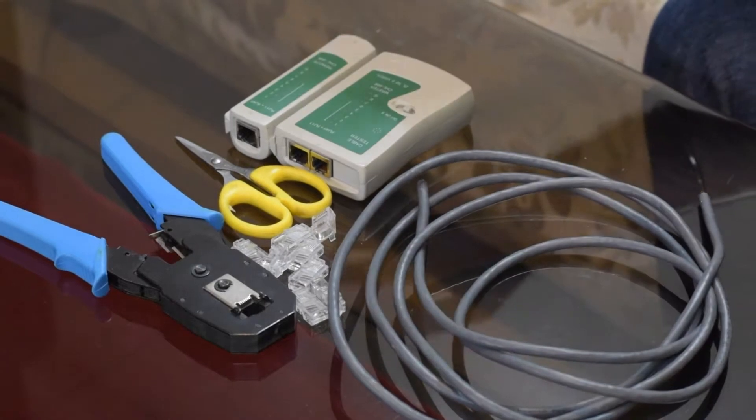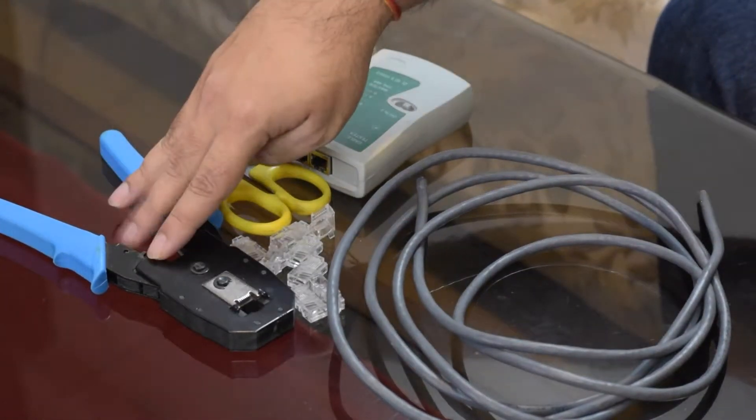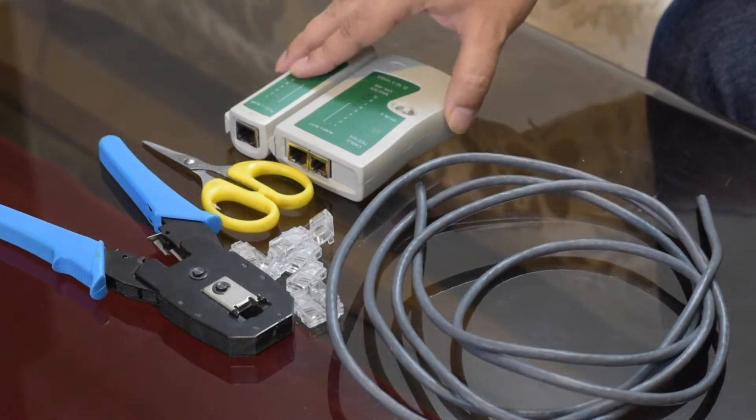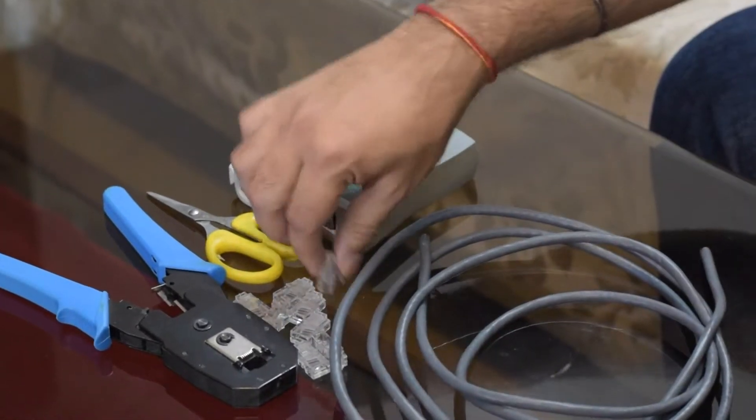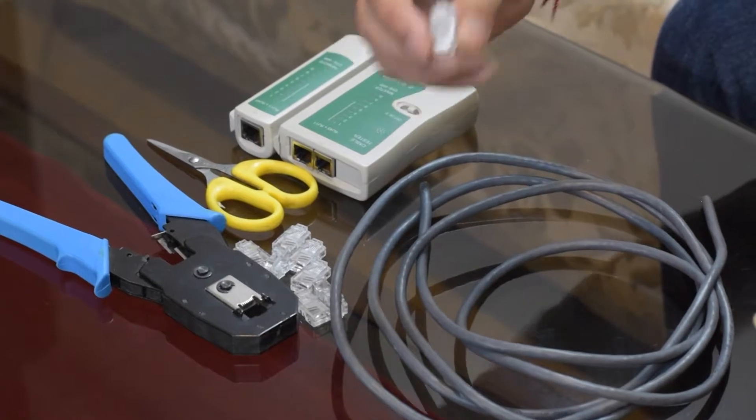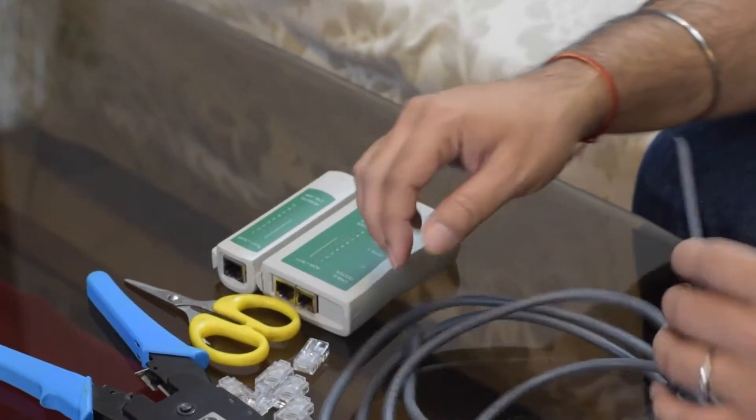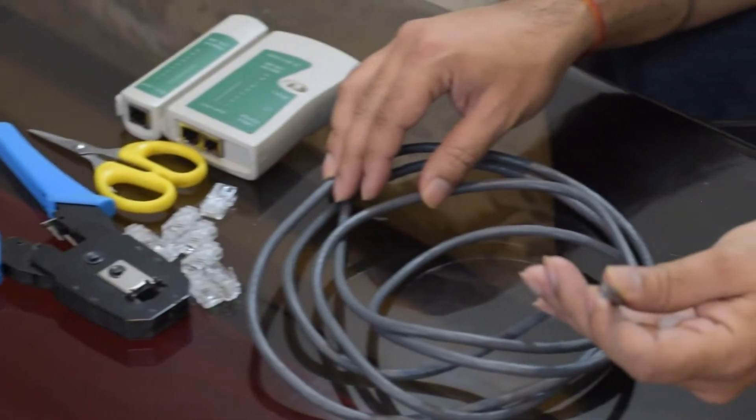So here I've laid out all the tools. This is your crimping tool. This is just a pair of scissors. This is your wire tester. These are the crimps or the connectors that would be crimped, and this is a strand of category 6 cable.